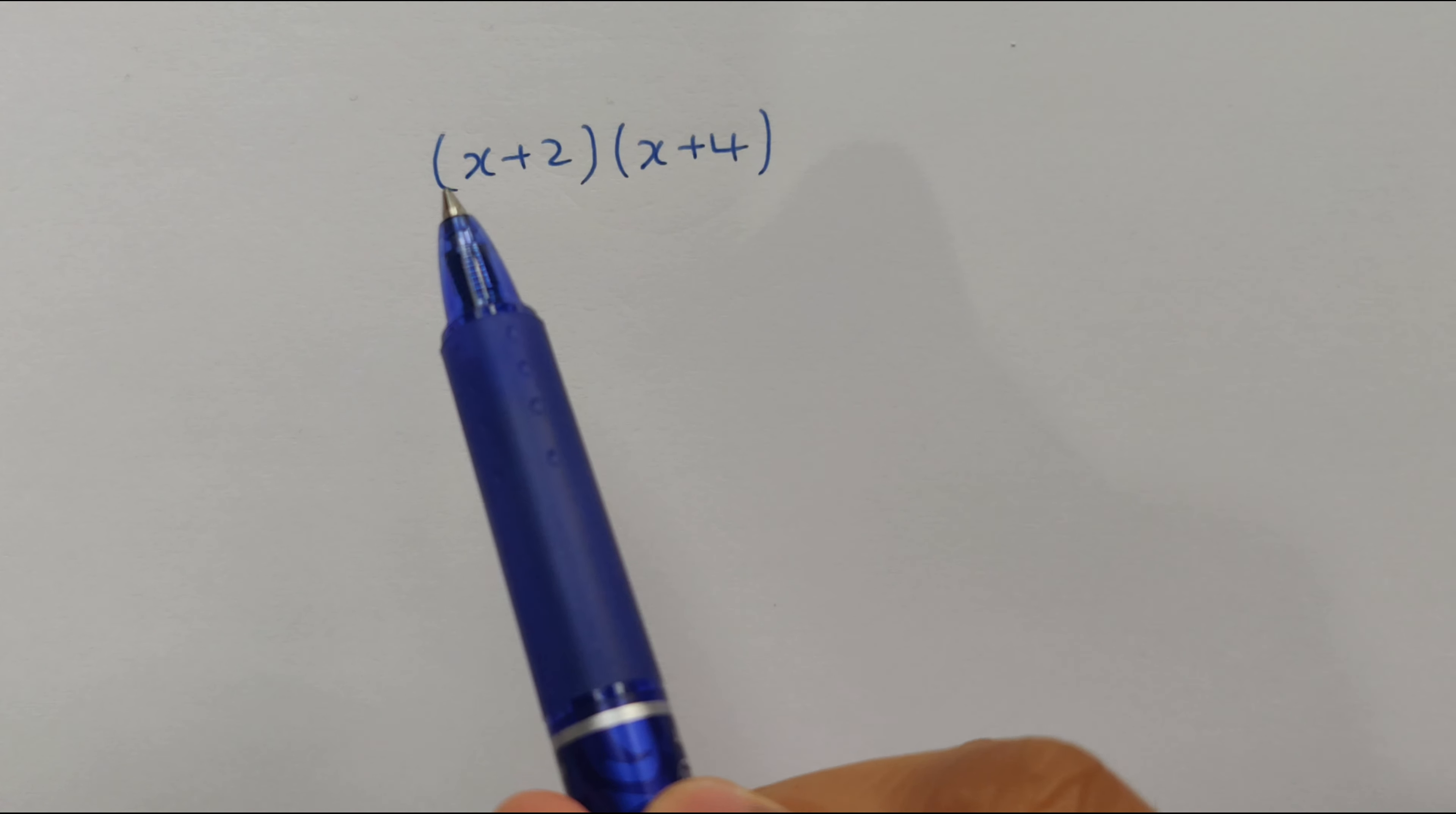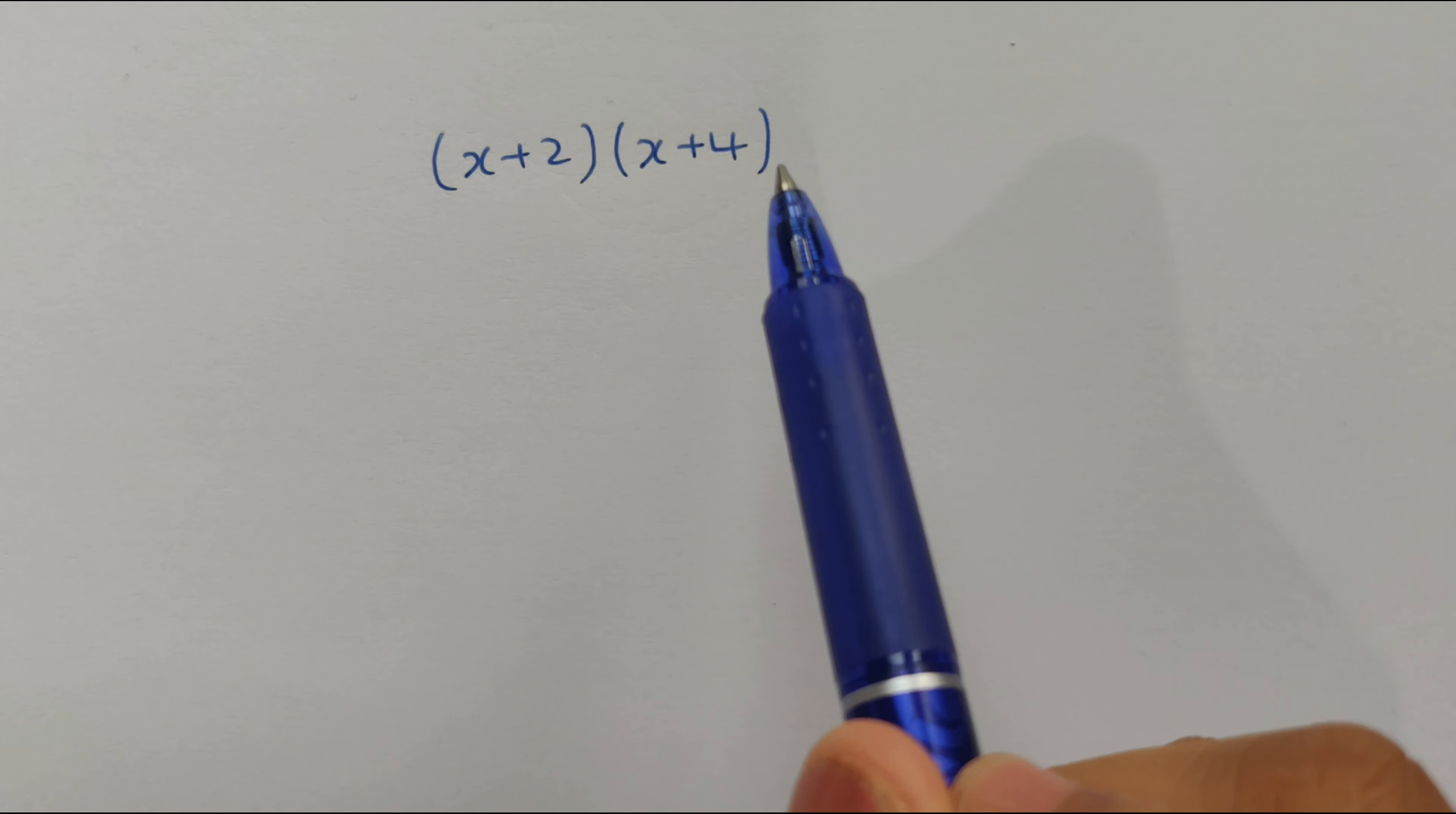Let's look at the example x plus 2, x plus 4. So, to expand this, we go x multiplied by x plus x multiplied by 4 plus 2 multiplied by x plus 2 multiplied by 4.